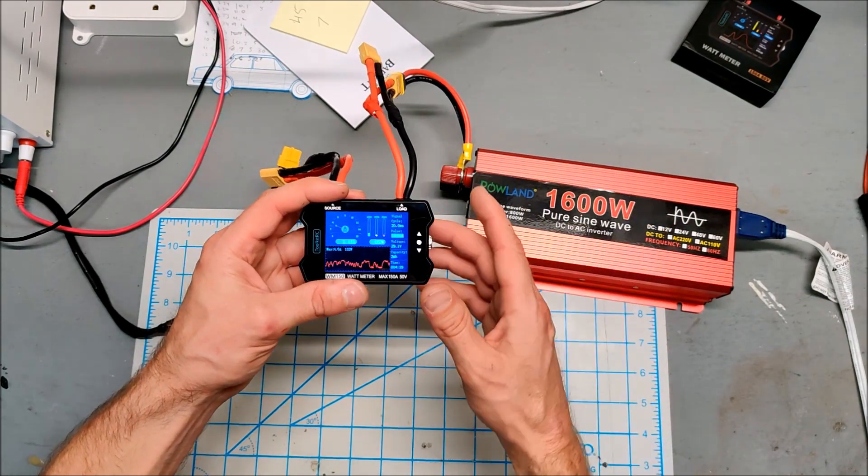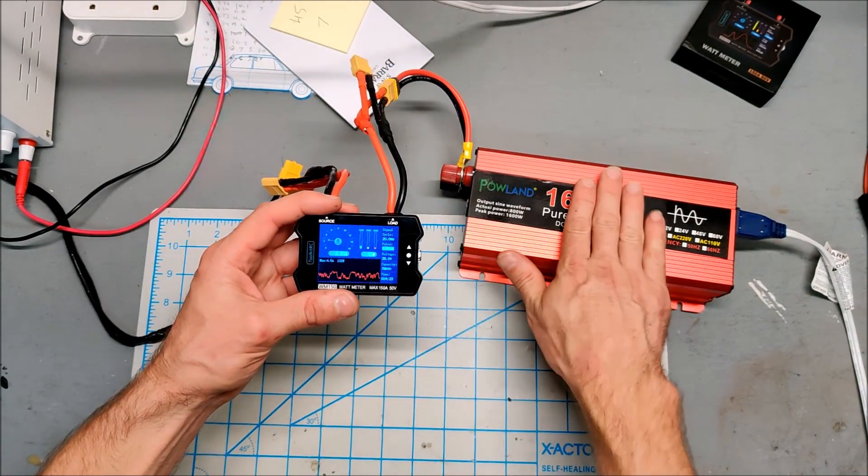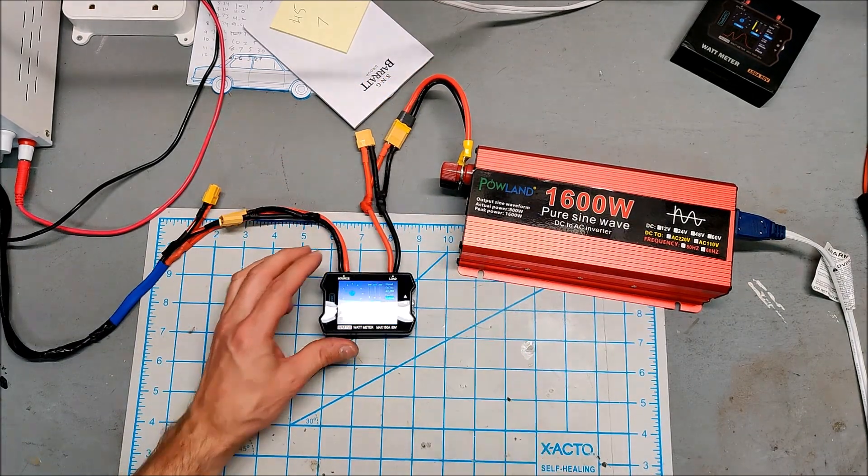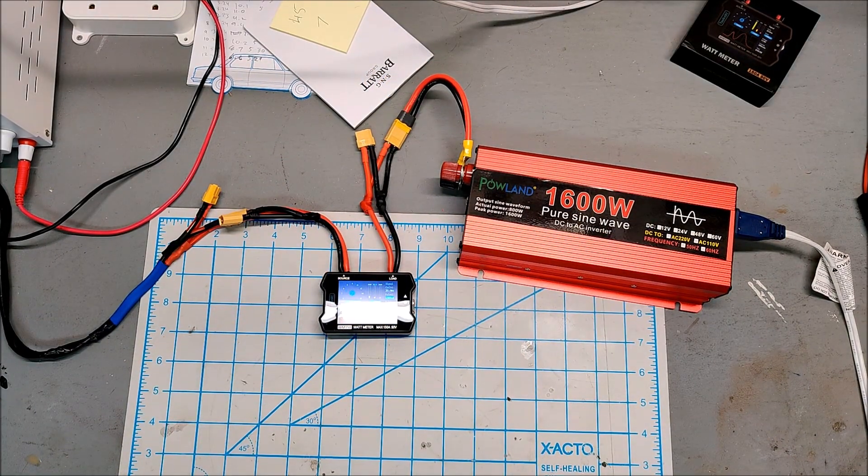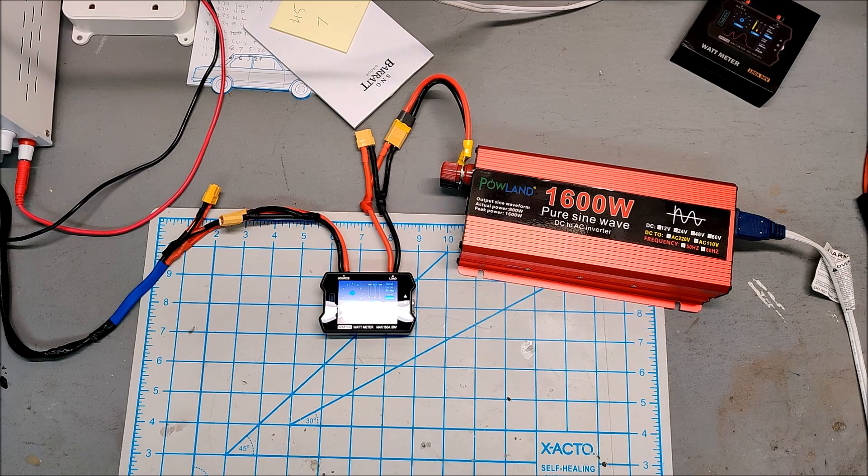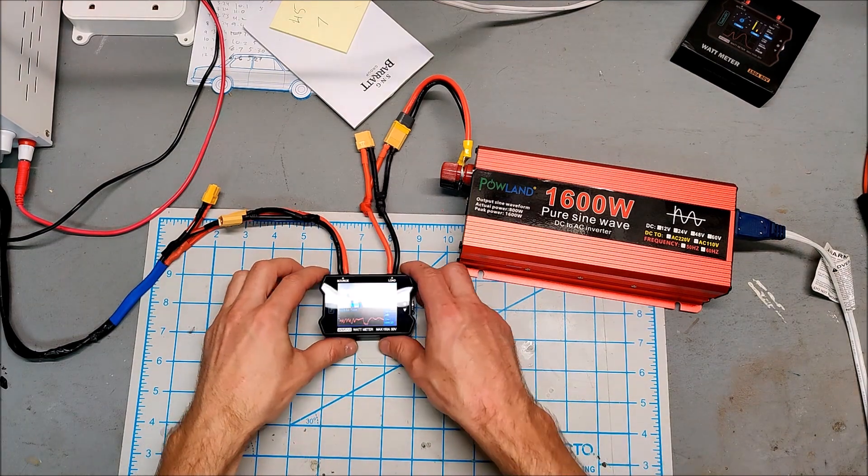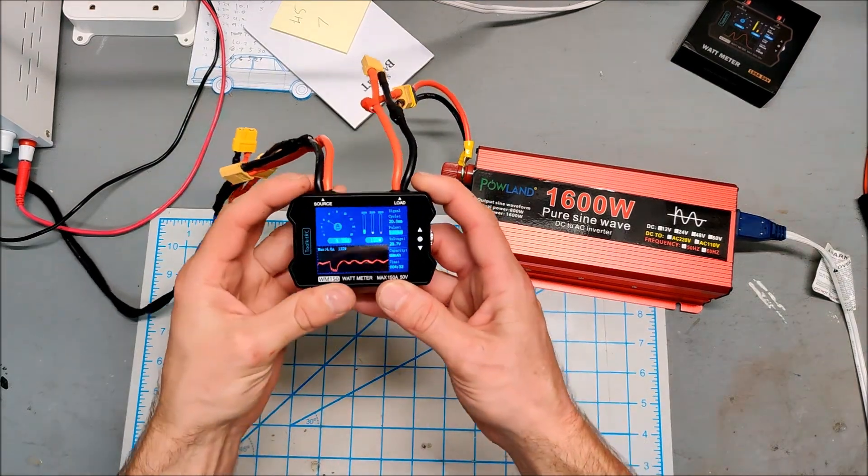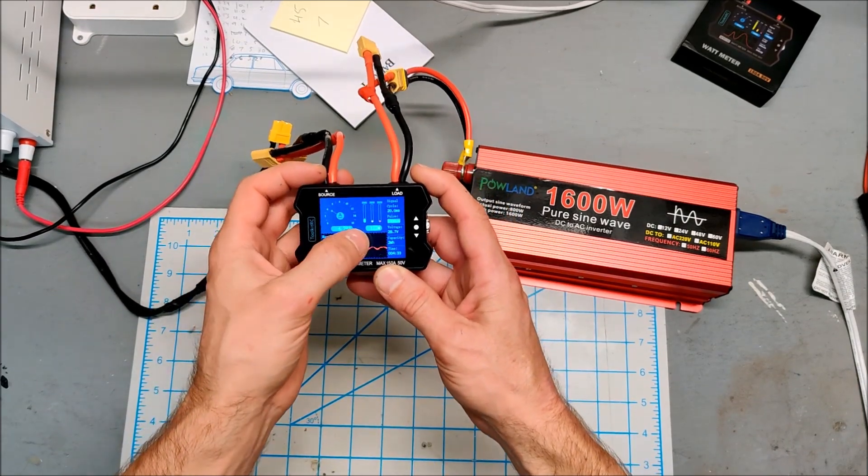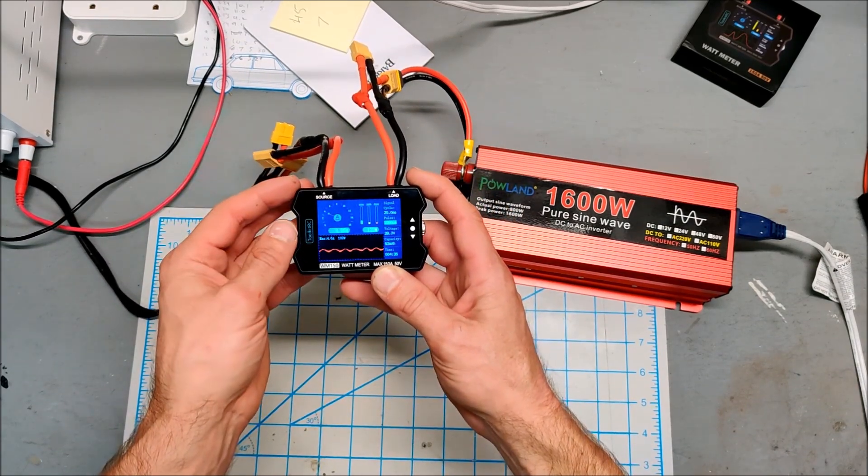It's jumping around so much. I wonder if that's because of how this thing works. Let me turn this all the way up. Okay, now we're pulling max draw, hitting 4 amps there, 120 watts over there.